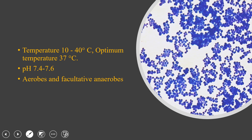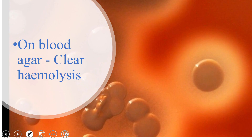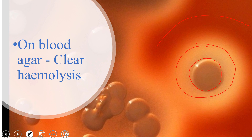Staphylococcus aureus has a wide temperature range for survival: 10 to 40 degrees Celsius, with an optimum of 37 degrees Celsius. Its pH requirement is approximately 7.4 to 7.6. It is an aerobe as well as a facultative anaerobe, meaning it can survive in the presence or absence of oxygen. On blood agar, Staphylococcus aureus produces a clear zone of hemolysis around its colonies.